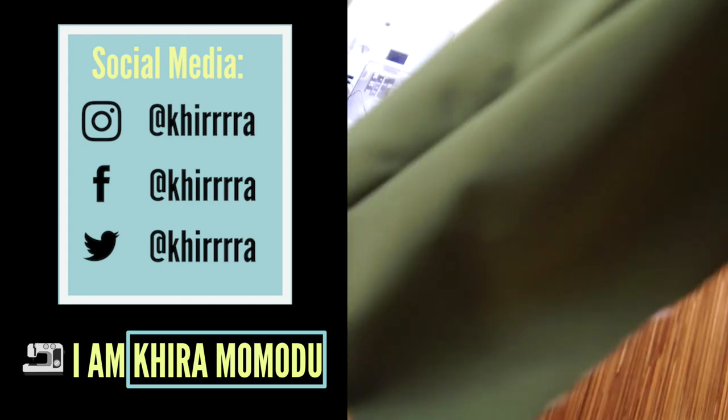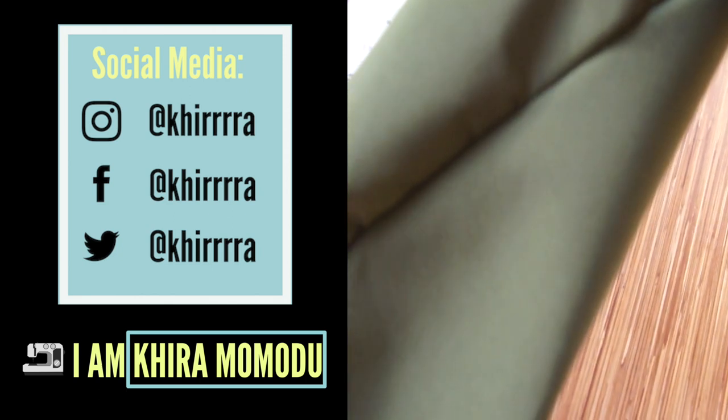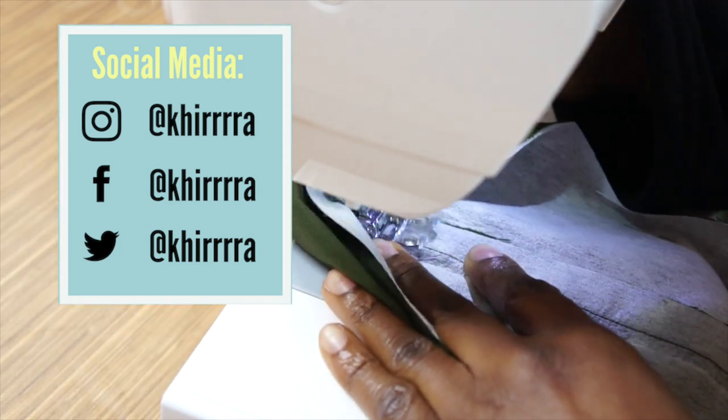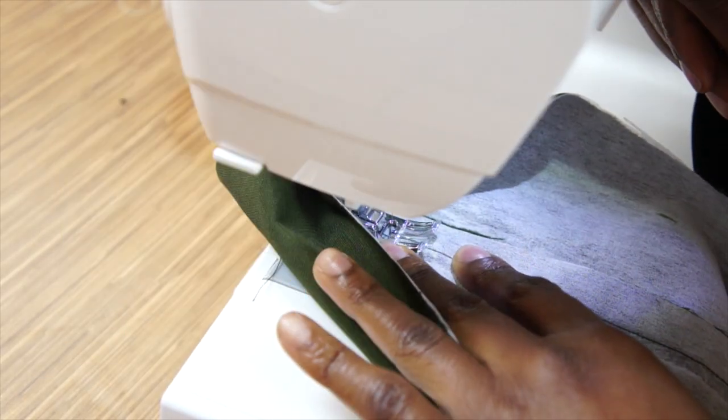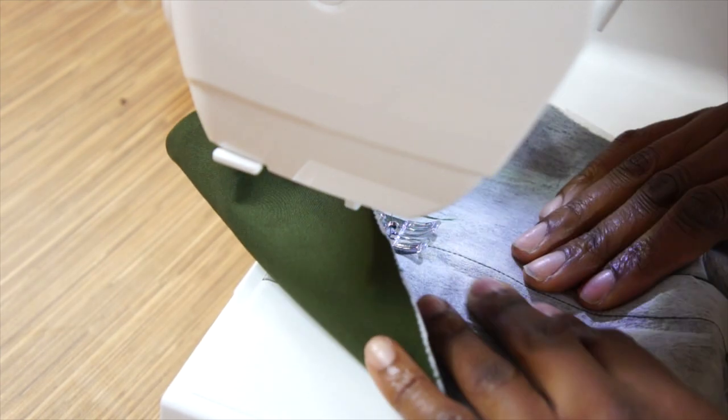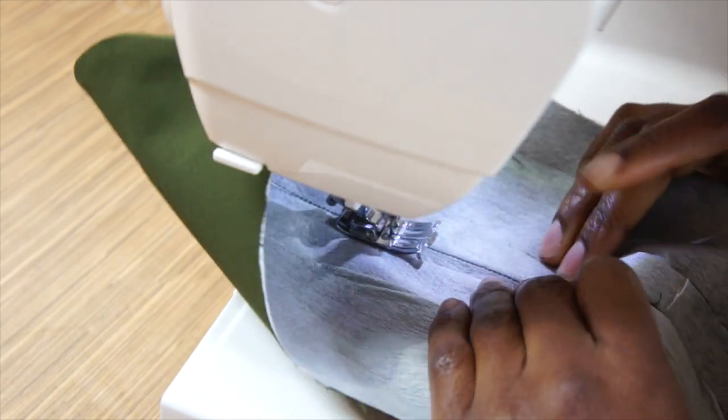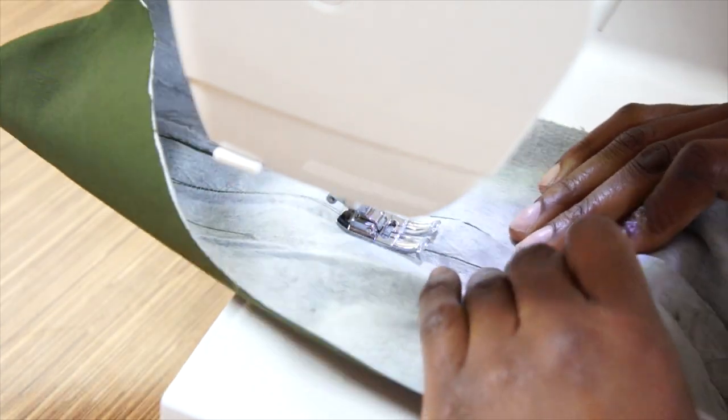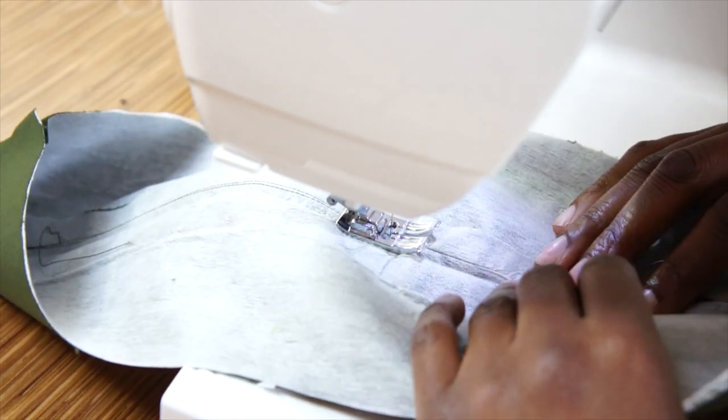Once you're done flip the collar around and it's time to understitch. In between each step be sure to take your fabric to the iron to press out those seams.